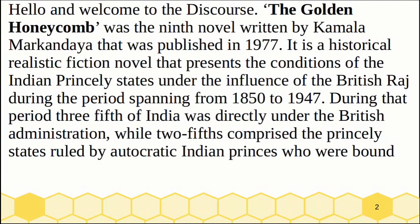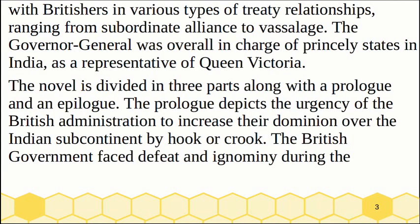The Golden Honeycomb was the ninth novel written by Kamala Markandia, published in 1977. It is a historical realistic fiction novel that presents the condition of the Indian princely states under the influence of the British Raj during the period spanning from 1850 to 1947. During that period, three-fifths of India was directly under the British administration, while two-fifths comprised the princely states ruled by autocratic Indian princes who were bound with the British in various types of treaty relationships, ranging from subordinate alliances to vassalage.